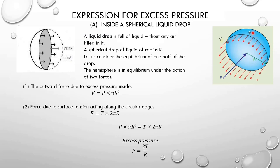The surface tension acts on the convex side. So the force due to surface tension acts in that direction. At the equilibrium position, the excess pressure and the force due to surface tension are in balance.